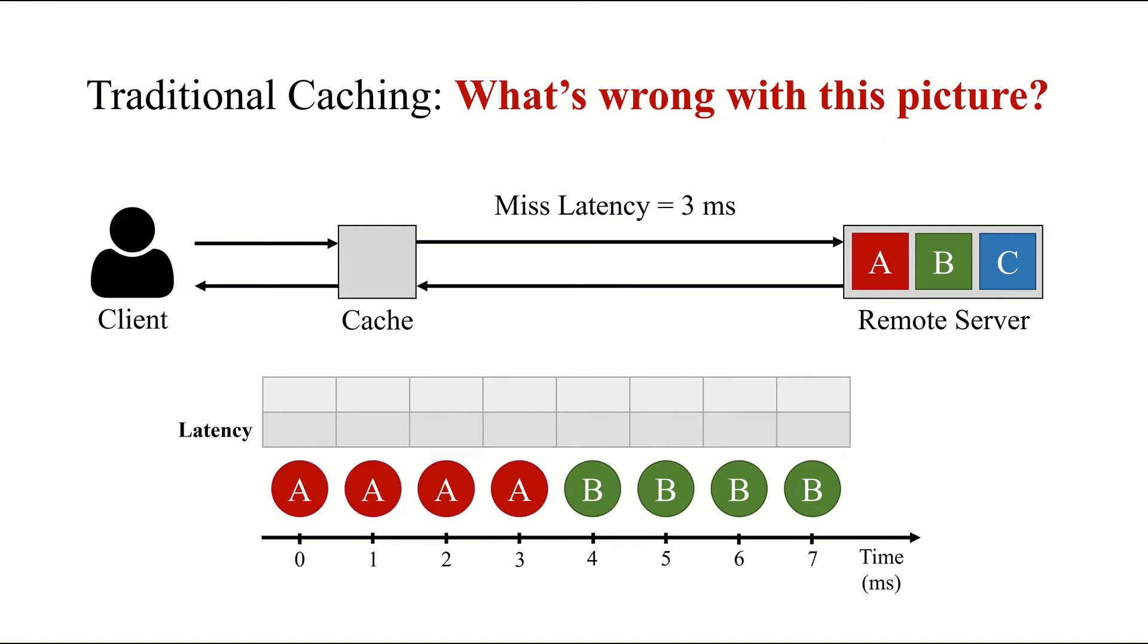We also have the following request sequence, with a new request arriving at the cache every 1 millisecond. When the first request to A arrives at T equals 0, our cache is empty. Consequently, the cache must first fetch this data from the remote server, and the request experiences a cache miss, with a latency of 3 milliseconds. The next set of requests to A can be served directly from the cache, and experience latencies corresponding to that of a cache hit. In this case, 0. We can repeat this process for the next set of requests to B, where we'd expect to see a cache miss and 3 subsequent hits.